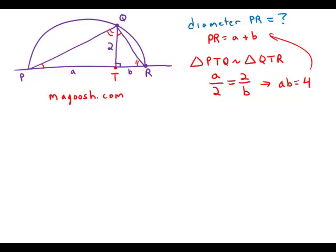Now, meanwhile, back to this question. Statement number 1 tells us a equals 4. It gives us a value of a. We can find b. We can find the diameter. Done. This is sufficient.